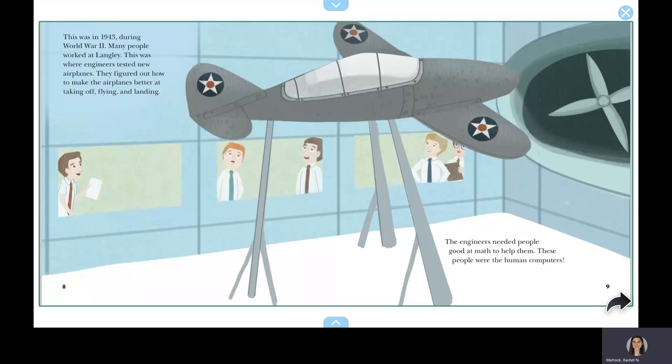This was in 1943, during World War II. Many people worked at Langley. This was where engineers tested new airplanes. They figured out how to make the airplanes better at taking off, flying, and landing. The engineers needed people good at math to help them. These people were the human computers.